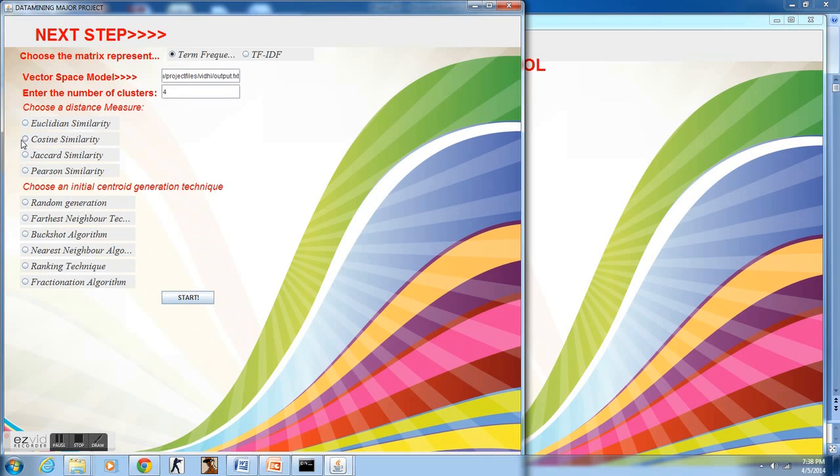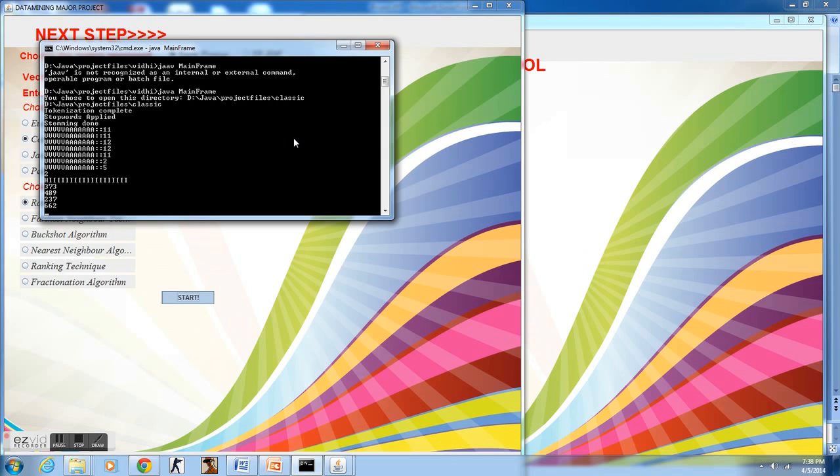I shall give the input number of classes as 4. Now, among these distance measures and initial centroid techniques, any one of them can be chosen. You can choose any one of those four. I have chosen cosine and I can choose any one of these six. I have chosen random generation. Now, when I hit start and go into my command prompt, I can see that the four initial centroids by using random generation and cosine measure have been selected.